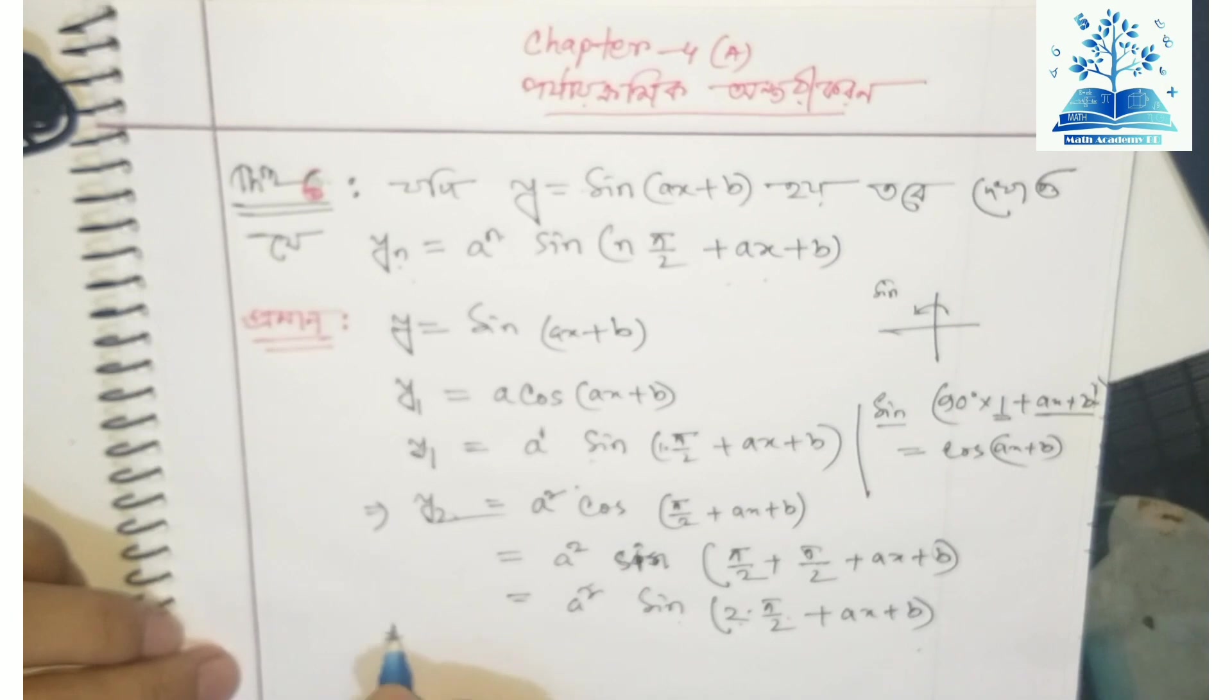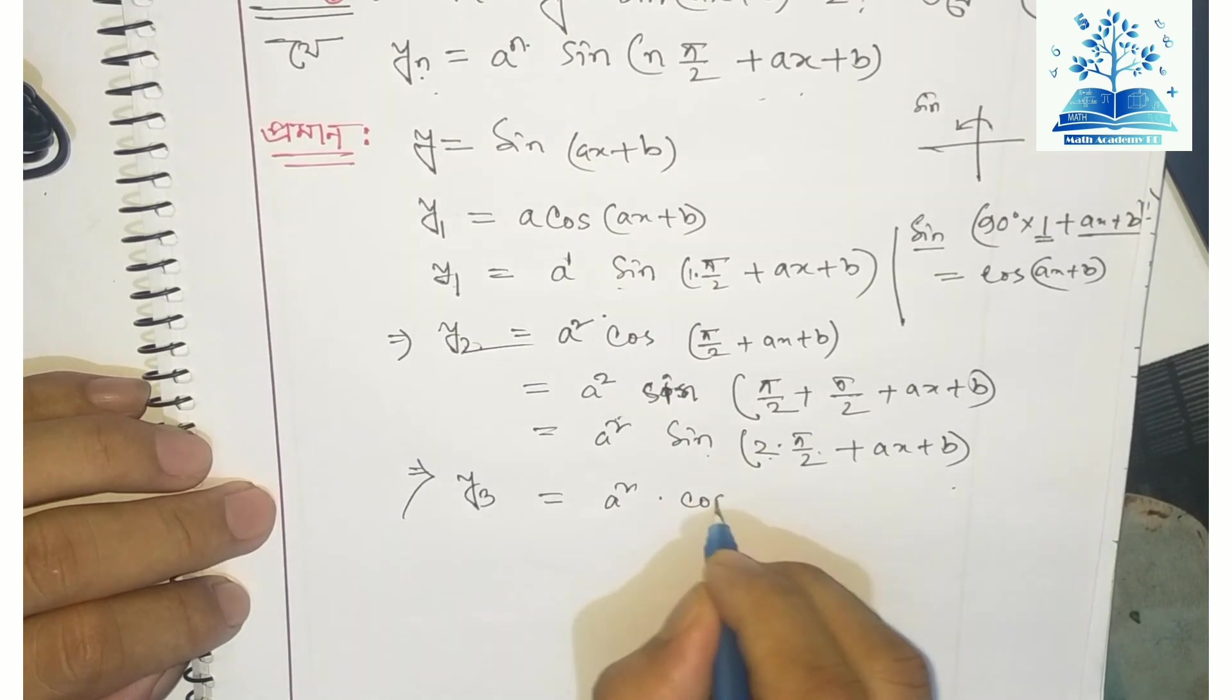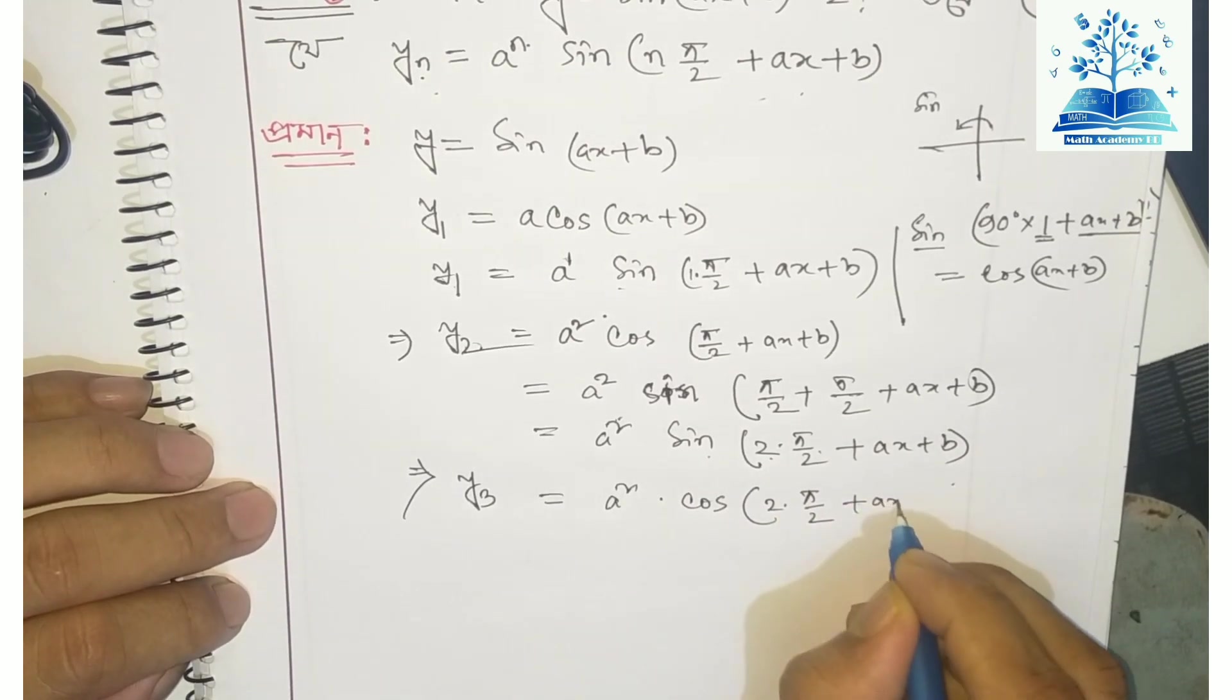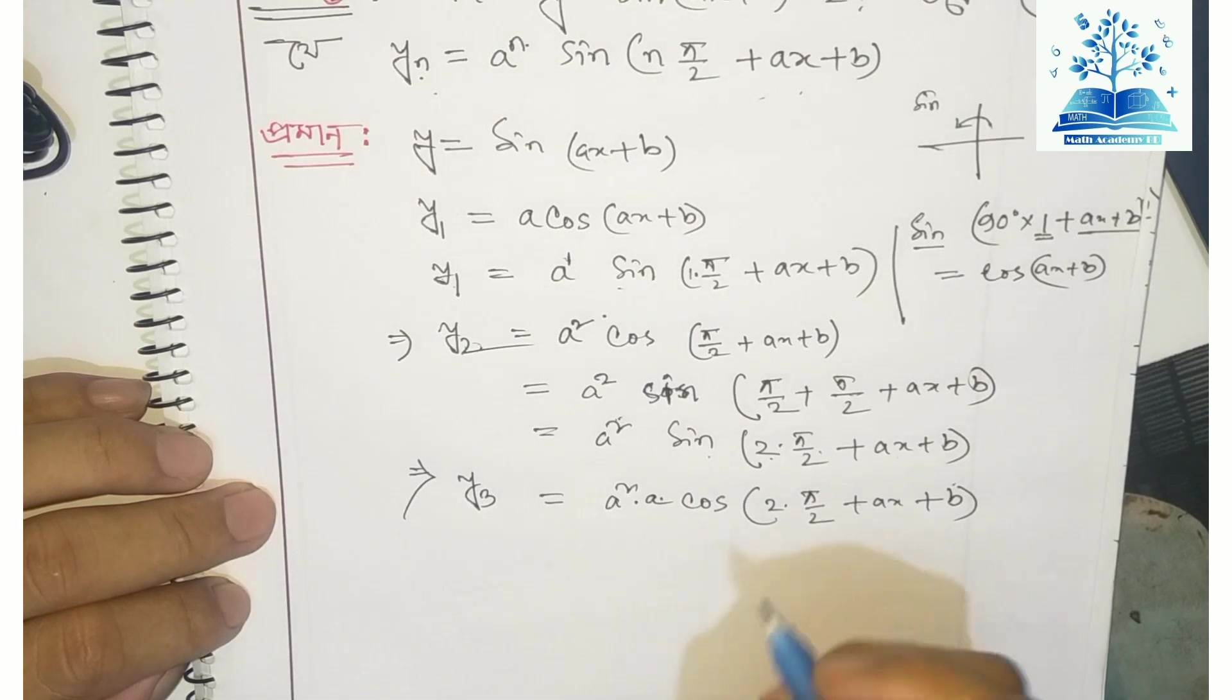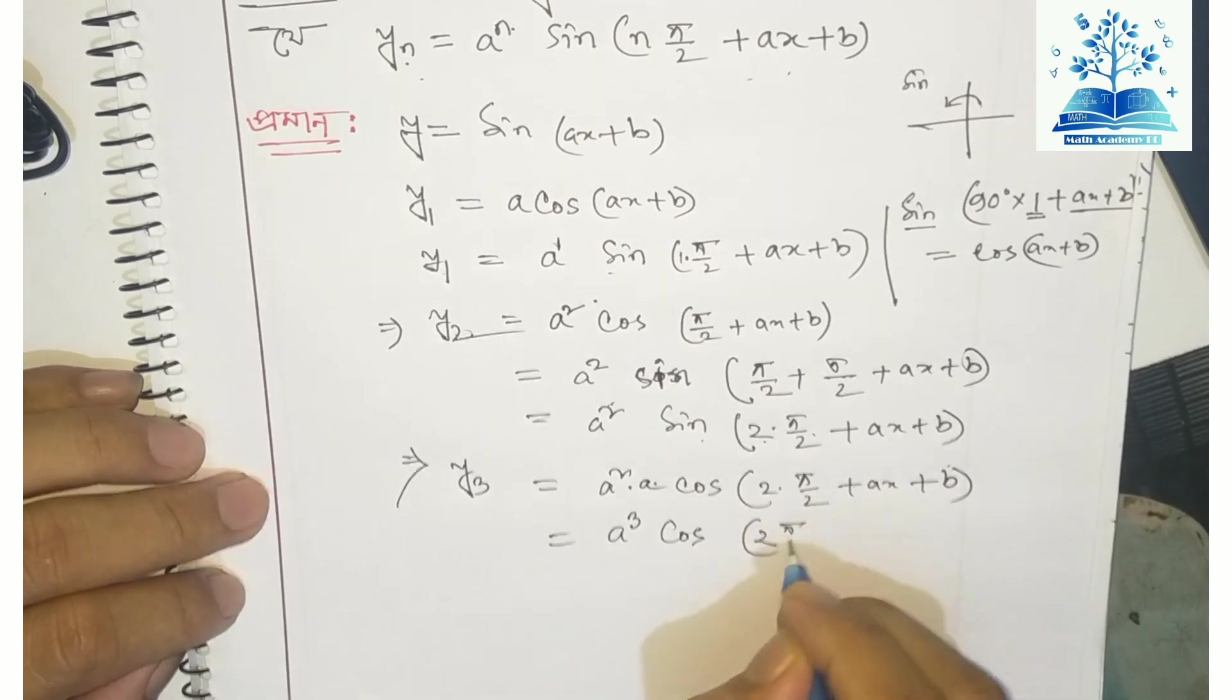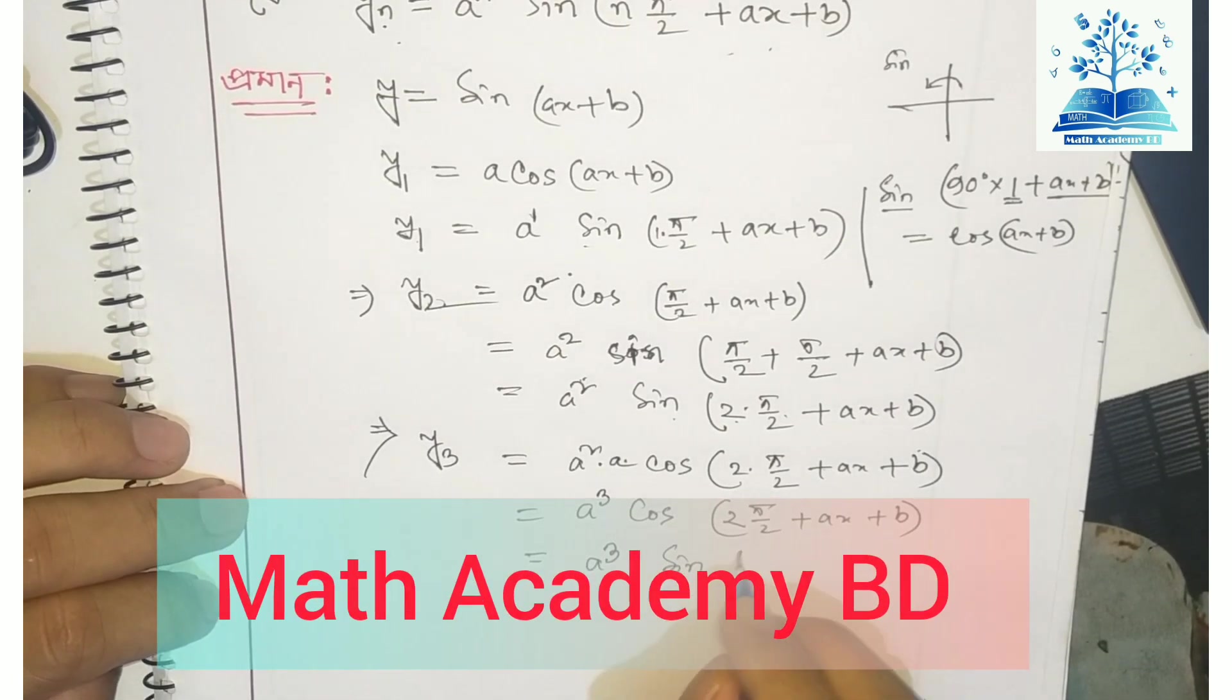Now for y₃: we differentiate -sin. When we differentiate -sin(x + b), the derivative of sin(x) gives cos(x). So y₃ = -a³ cos(π/2 + x + b).